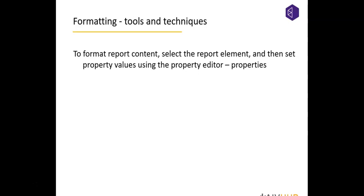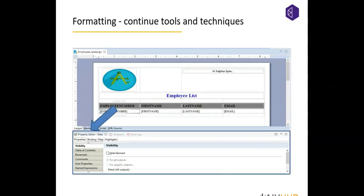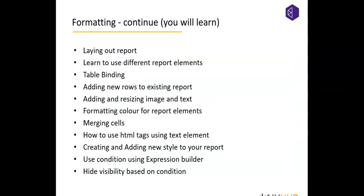We are also going to format content and elements using property values like the property editor, which we saw in the last chapter. In the property editor you have tools to change certain properties like visibility, size, font values, colors, and many other things. Whatever changes you make in the property editor will reflect in your output, so you have to be very careful while doing any changes.